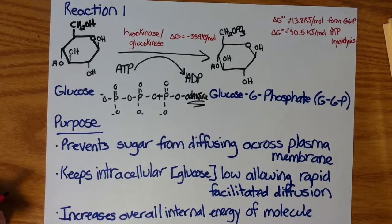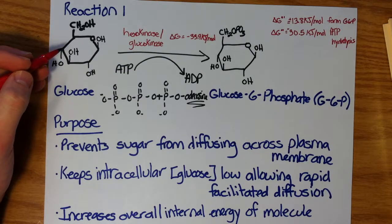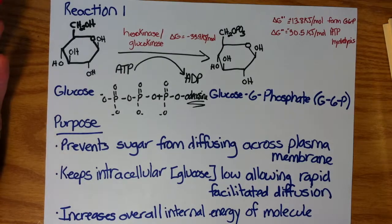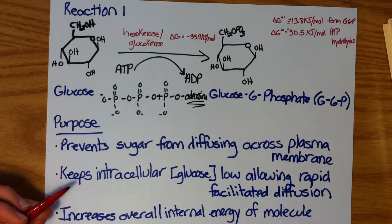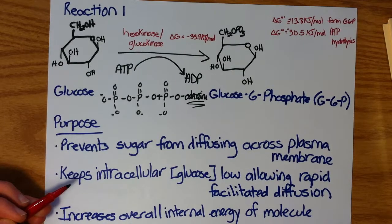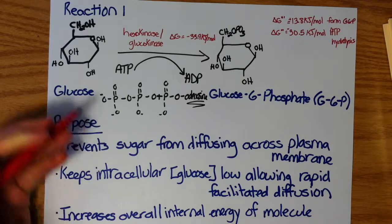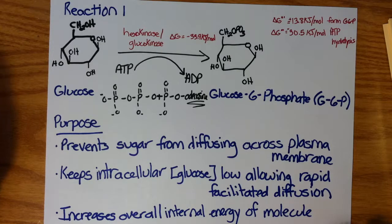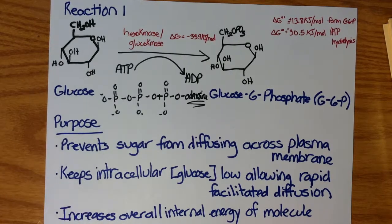By doing that, you prevent the molecule from diffusing back across the plasma membrane, which without this strong negative phosphate group, it would be able to rapidly diffuse back outside the cell. It also keeps the relative glucose concentration inside the cell low, which is what's allowing for the rapid diffusion down its concentration gradient. These reactions are all involved in the investment phase, so we are increasing the internal energy of the molecule so that later on, we can utilize and harvest the energy to make some metabolic energy in the form of ATP.